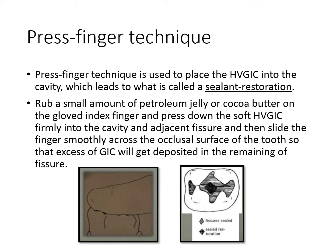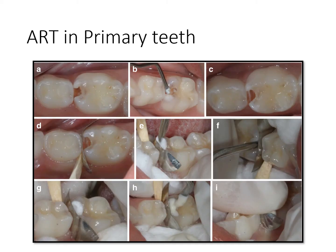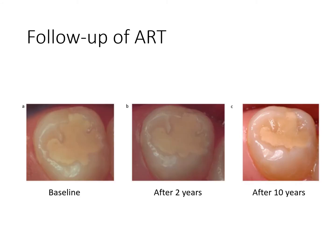For a proximal surface example, the hand instrument is used to excavate the caries. After caries excavation, a band is placed interproximally to create a wall against which the GIC can be condensed. The GIC is then placed and the finger pressure technique is applied to ensure the GIC is nicely flushed with the tooth surface and well condensed.